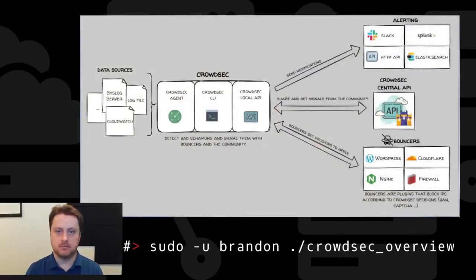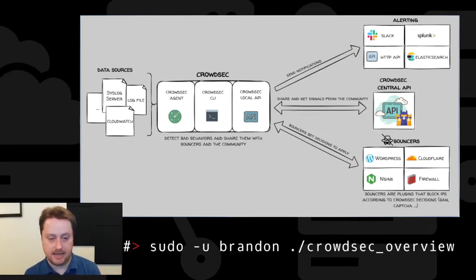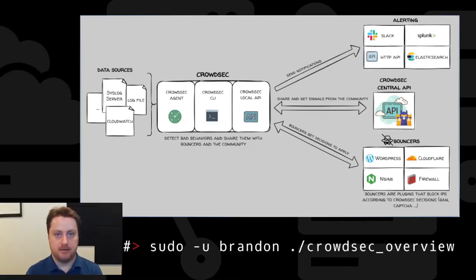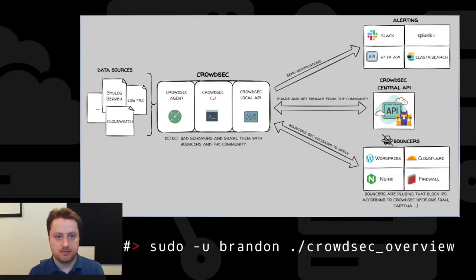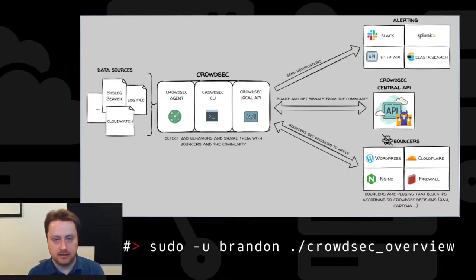The two main pieces of software for CrowdSec you need to get started are the CrowdSec agent, which is made up of two components, and the CrowdSec bouncer. The agent ingests your logs — for example, monitoring your Apache logs — and utilizes a CrowdSec parser and a CrowdSec scenario. A parser is a configuration file that lets you specify in YAML how a string in a log should be parsed. A scenario allows you to define a potential event based on those parsed logs, such as Log4j attacks or a classic SSH brute force attack. Many others can be found on CrowdSec Hub, linked below.